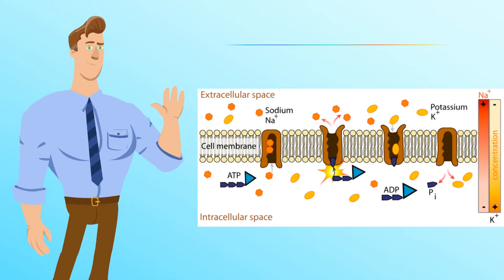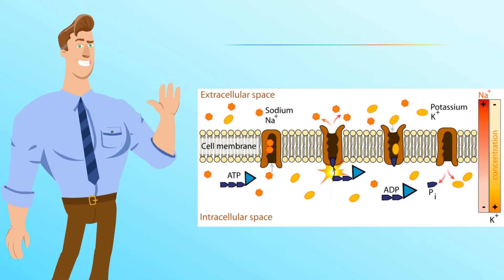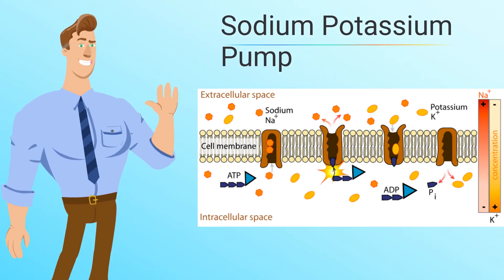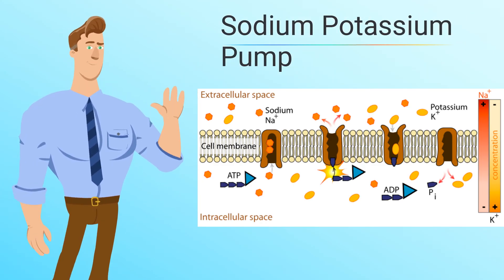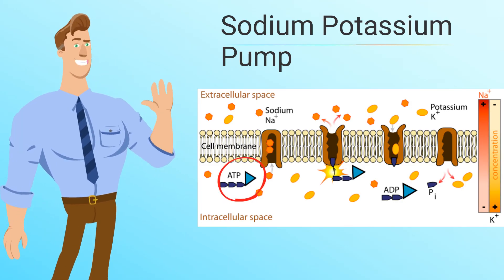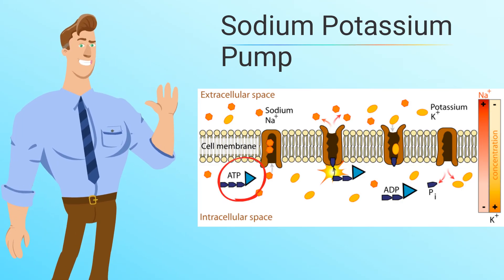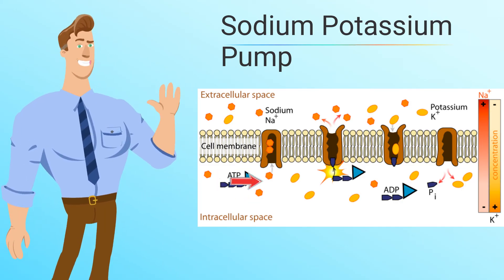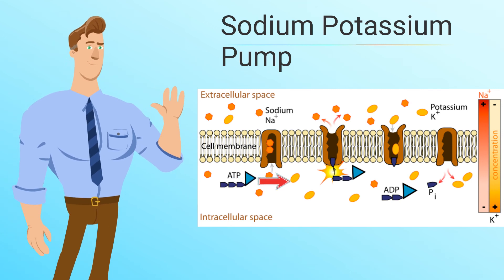Another type of active transport, which requires energy, is the sodium-potassium pump, which uses ATP. Sodium ions inside the cell attach to the pump with the help of ATP. The pump then changes shape and the sodium ions are released outside of the cell.